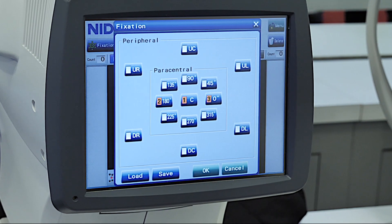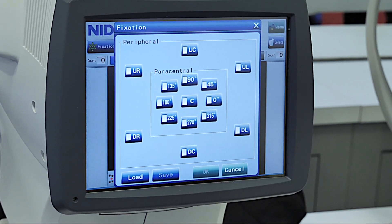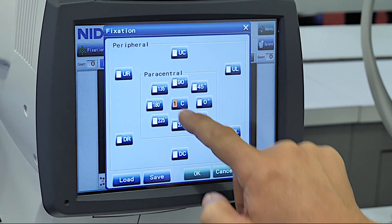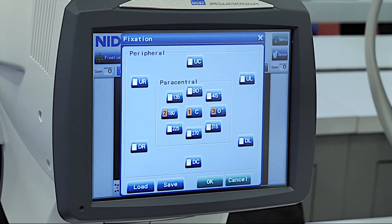First you're going to select the fixation points that you want to evaluate. We can image central, paracentral, and peripheral. We can select one, or we can select three, or we can select all of them.